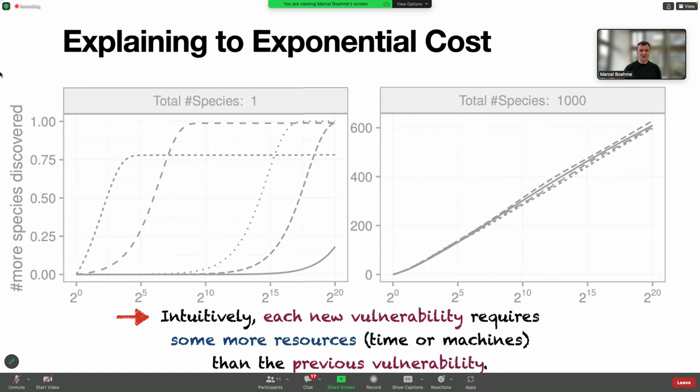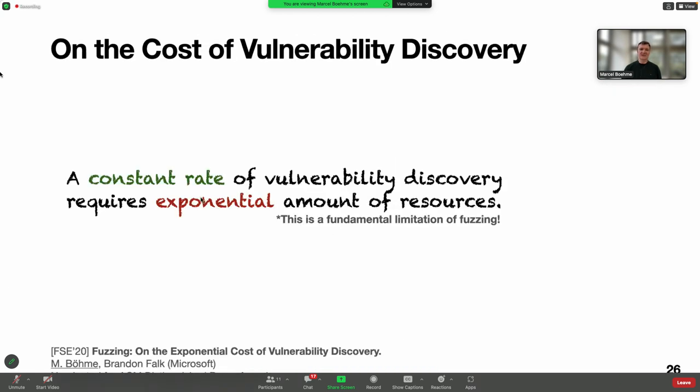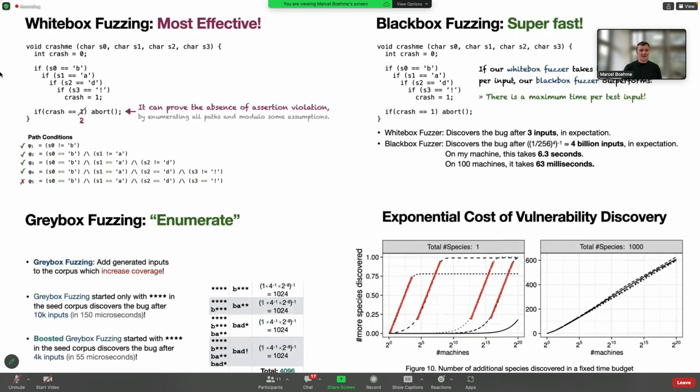Intuitively, each new vulnerability requires more resources than the previous vulnerability. A constant rate of vulnerability discovery requires exponential amounts of resources. So what I showed you is white box, a technique we love to work with that's really smart, analyzes the program, and is most effective. But in practice it's easily outperformed by a very dumb technique called black box, simply randomly generating inputs. This is so efficient we can scale across lots of machines and find the same number of bugs x times faster. I also talked about gray box fuzzing that leverages the efficiency of black box but enumerates paths like white box. But even gray box fuzzing is affected by an exponential cost. Thank you so much.